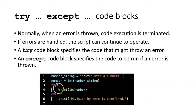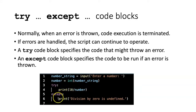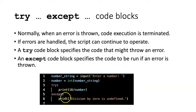We define a code block following a try statement to include the part of the code that we think might throw the error. Then, in the code block that follows the except statement, we place the code that we intend to handle the error if it occurs. In this example, we are dividing by the number that the user types in. However, if the user types in a zero, that will throw an error and cause the script to crash. The error handling here is very simple — we just tell the user that division by zero is undefined and the program comes to an end.